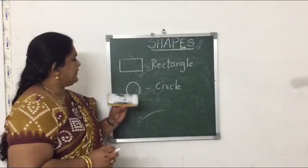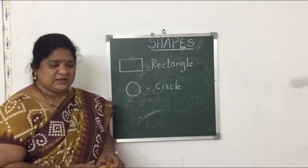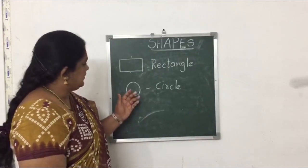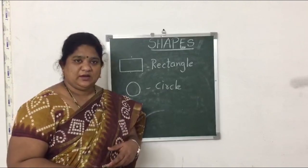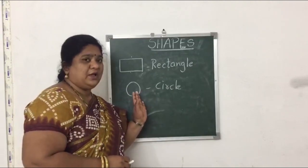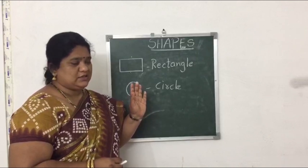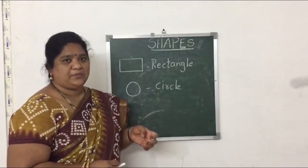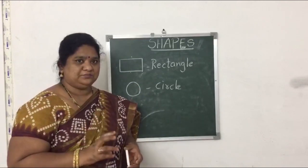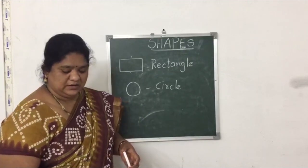Now, the circle. Does circle have any sides or corners, children? No, it does not have any side or corner. It is round in shape. Examples of circle: ball, apple.